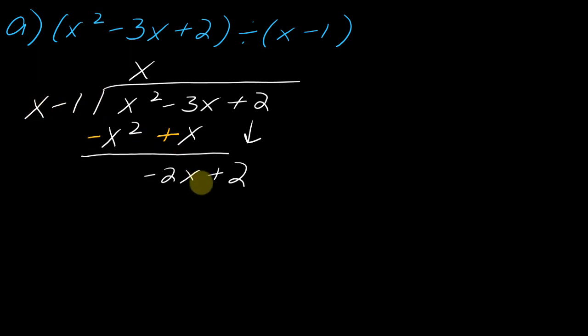What do I have to multiply x by to get to negative 2x? Well, I'd have to multiply it by negative 2. So now I multiply negative 2 times that whole expression. So negative 2 times x is negative 2x, negative 2 times negative 1 is positive 2. And then I need to subtract all of this off. And so that will give me that remainder of 0. So I'm good to go.